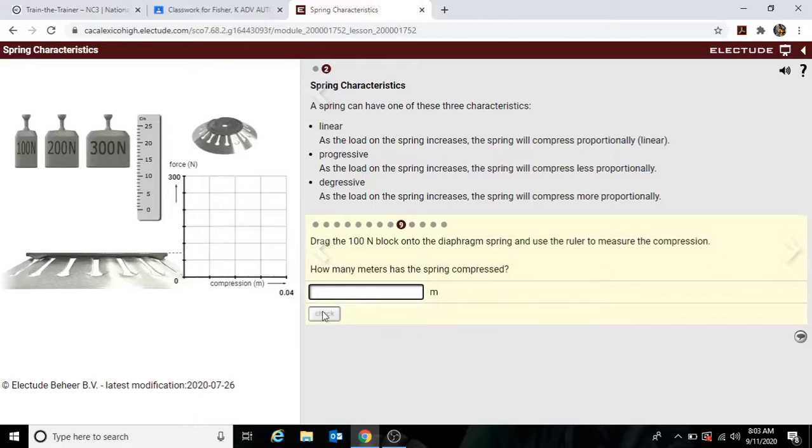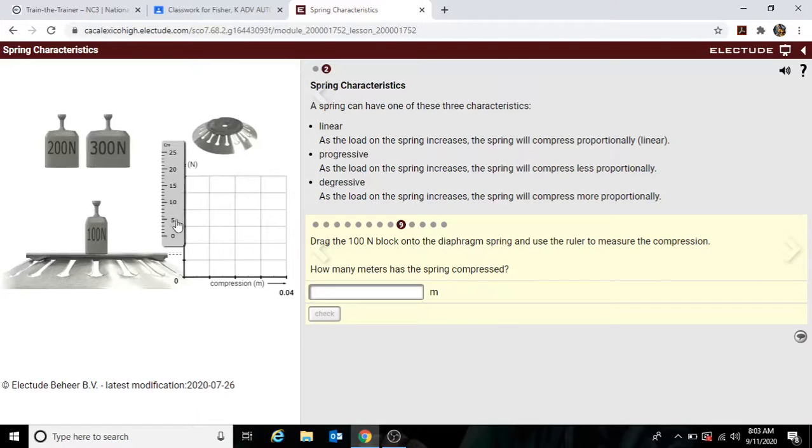Now, here we have a new type of spring here, but it's still nonetheless a spring. And let's measure this. This is very hard to see. So it's about half a centimeter. So about five millimeters. So the measurement here is going to have to be 0.005 because it's half a centimeter. So we have to break it down into millimeters down here.